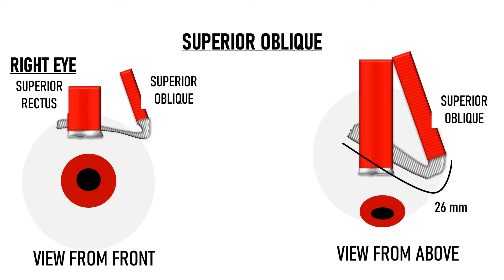Of all the extraocular muscles, the superior oblique has the longest tendon at about 26 mm. The average width of insertion is 11 mm, and the anterior end of the superior oblique insertion is approximately 4.5 mm posterior to the temporal end of the superior rectus insertion. These values are very variable. The superior oblique is connected to the superior rectus by the intermuscular septum.